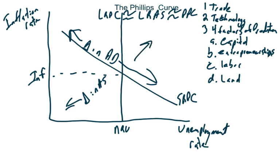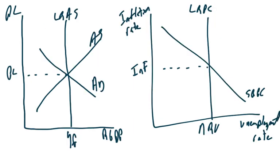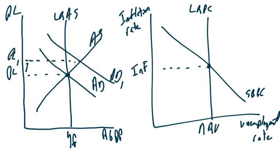How does this all work? Let's see how these two graphs work in conjunction with each other. I am going to start with an aggregate demand and aggregate supply graph that's in equilibrium, and we are going to see what happens to it and then show the changes in the Phillips Curve graph as well. In this case, we are going to pretend everybody got a pay raise, and that is going to move aggregate demand to the right. Why? Because now everybody has more money to spend, and when you give people more money to spend, they go out and spend it. Consumer spending drives up aggregate demand.